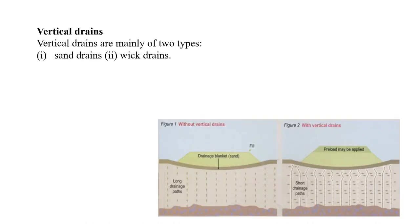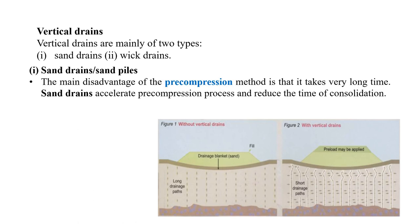Now we shall proceed to the next topic: vertical drains. Sand drains and wick drains both come under vertical drains. The main disadvantage of the pre-compression method is that it takes very long time. Sand drains accelerate the pre-compression process and reduce the time of consolidation — that means sand drains act as a catalyst. Once sand drains are used along with the surcharge fill, compression is accelerated.